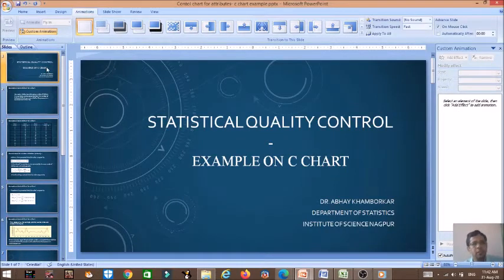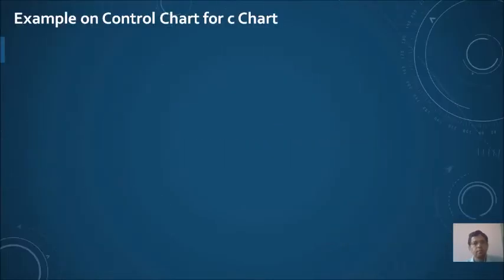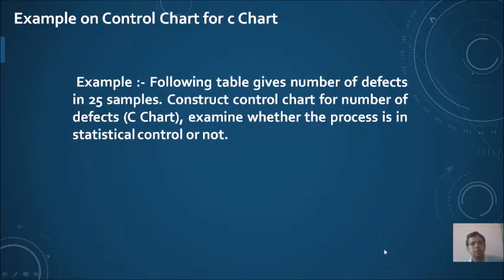Let us see an example on the control chart for number of defects, that is the c chart. Here, the data is given to us - the number of samples are 25 and the number of defects from each of those samples is given. We have to make a comment on whether the process is in statistical control or not.